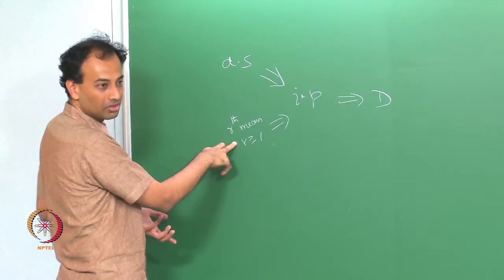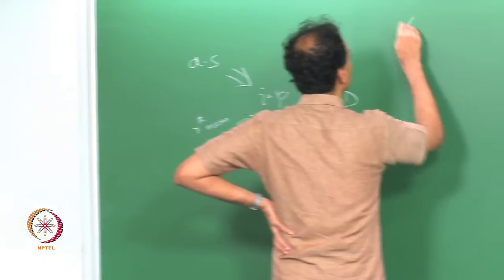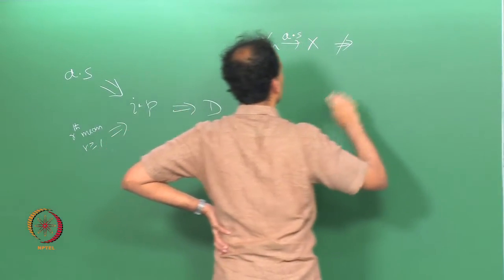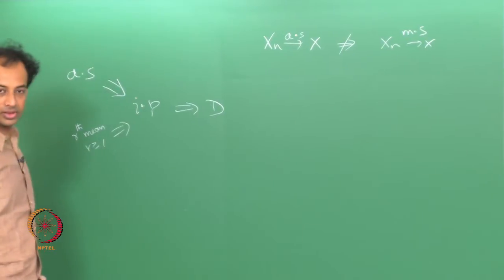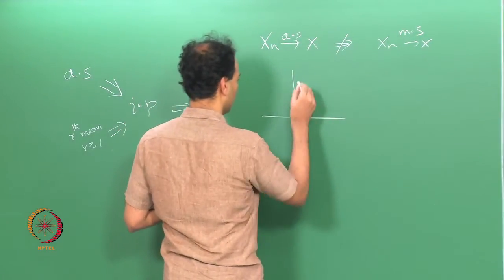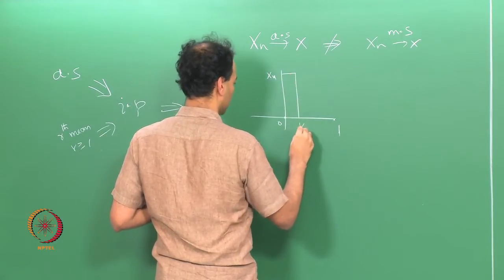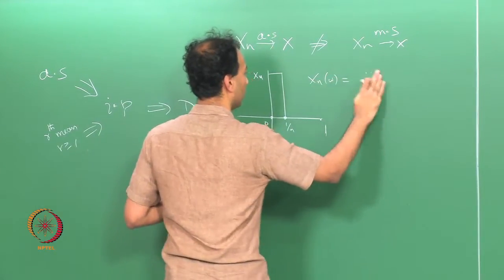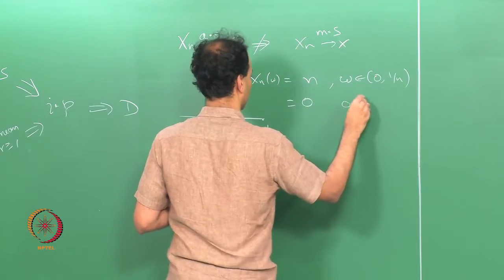Almost sure convergence does not imply mean square convergence, and mean square convergence does not imply almost sure convergence. To see that x_n converges to x almost surely does not imply convergence in mean square — we have already seen this example. Take the sample space as the interval [0,1], and let x_n(ω) = n for ω in (0, 1/n], and 0 otherwise.